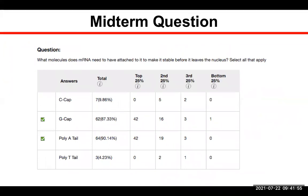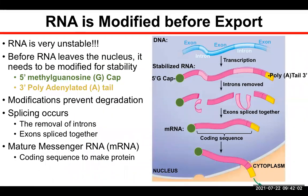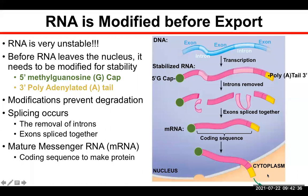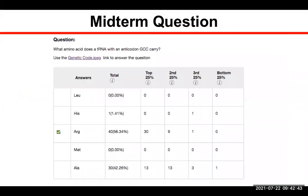What molecule does mRNA need to have attached to it to make it stable before it leaves the nucleus? This goes back to what happens before RNA is exported out of the nucleus. RNA is very unstable, so in order to make it stable, a couple of things need to happen: it needs the 5' G cap and the 3' polyadenylated tail. There are also a couple of other things that occur to make the RNA more condensed so the ribosomes can translate it more efficiently.